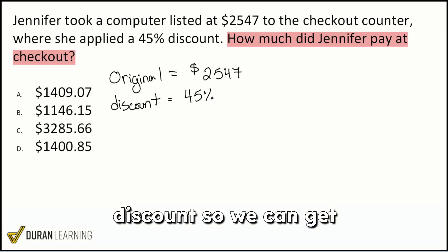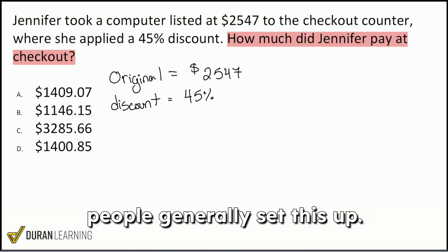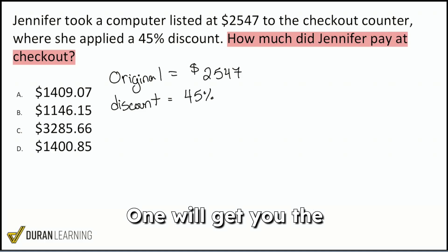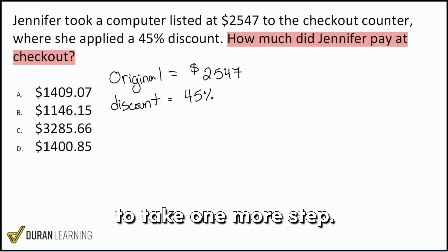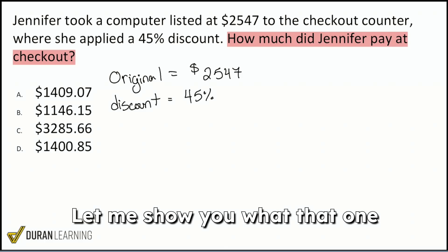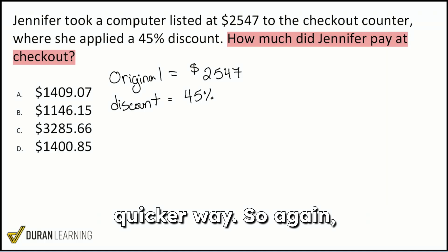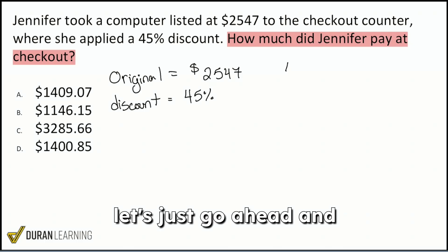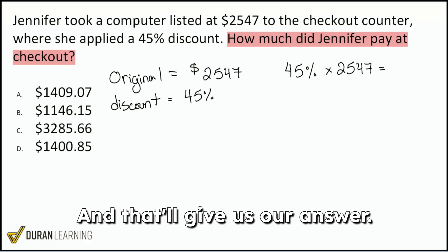We're going to apply that discount to get the final price, but there are two ways that most people generally set this up. One will get you the answer right away and the other will require you to take one more step. Let me show you what that one more step looks like quickly, and then I'll show you the quicker way. Most folks will think: let's just do 45% times $2547 and that'll give us our answer. Not quite.